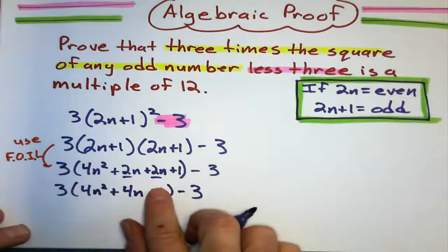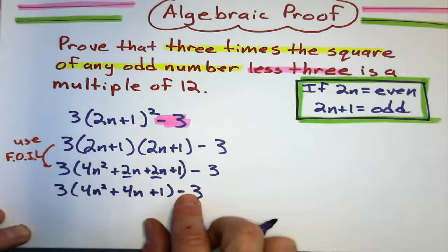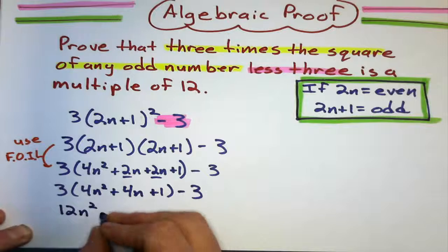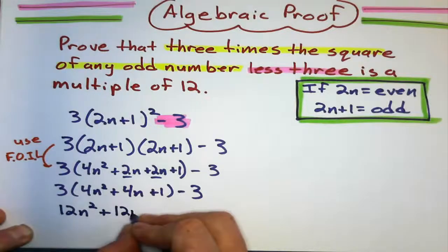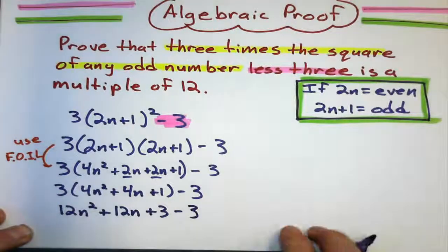Still following the rules of BEDMAS, I'm going to multiply that 3 through before I subtract anything, because multiplying comes before takeaway. So, I multiply that through and I get 12n squared plus 12n plus 3 minus 3.